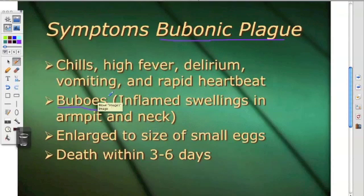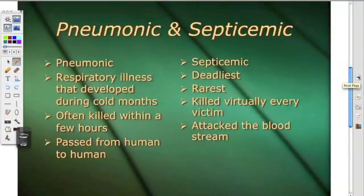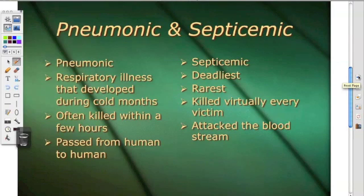If you ever had a bubu, that's where they get the word from. Pneumonic plague was a respiratory illness that developed during the cold months — it often killed within a few hours and passed from human to human. Septicemic is the deadliest and the rarest; it killed virtually every victim and attacked the bloodstream.